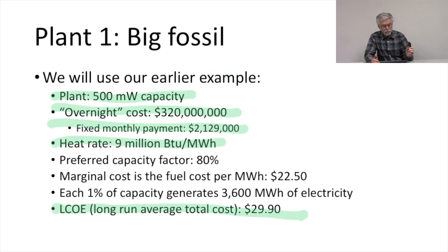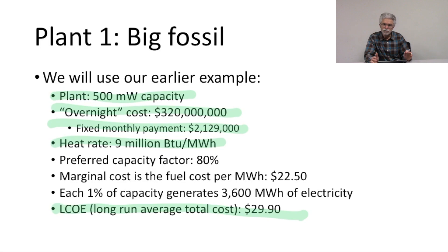We'll start with plant one, Big Fossil. We're going to use the same plant we used in our earlier example. That was a 500 megawatt capacity power plant, had an overnight cost of $320 million, and so at 7% interest on a 360-month contract, that's a fixed monthly payment of $2,129,000 per month.